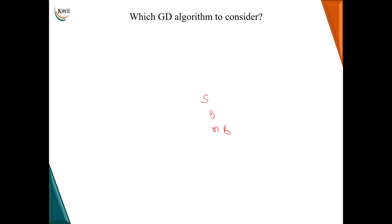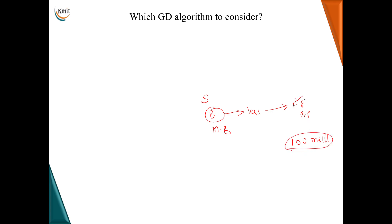Among the three variants, one might think batch gradient descent is fastest since it uses the entire dataset in one pass, but that is not the case. Each time we update the weight, we must process the entire dataset. With 100 million training examples, every single step loads all 100 million examples for forward and backward pass — making it computationally expensive and complex for large datasets.